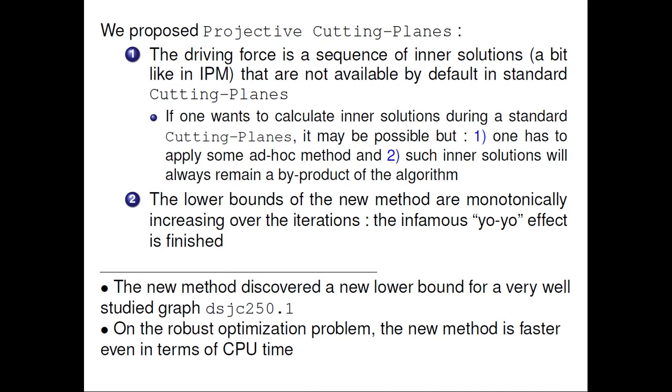And the last thing to say is that I can emphasize the fact that the new method was able to discover a new lower bound for a very well studied graph in the field of graph coloring. And we managed to do this even if this paper was not supposed to be a competition paper. This was not the main goal to be a competition paper, but we could beat other methods on such graphs. Why? Because this graph is quite huge and neither the standard cutting planes nor the new method could finish solving the associated column generation model.